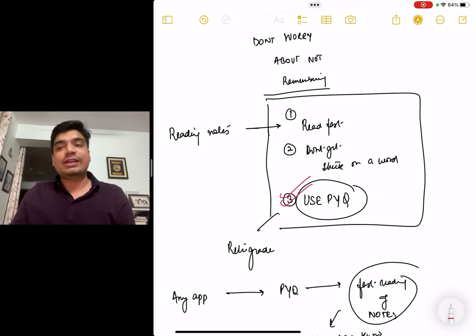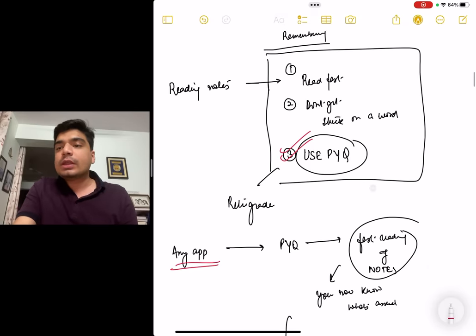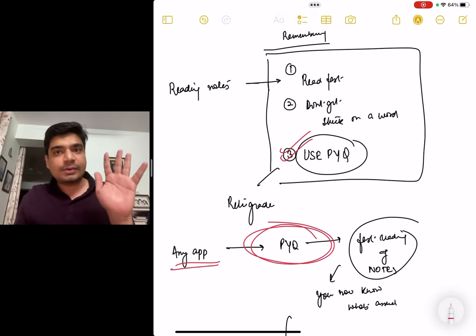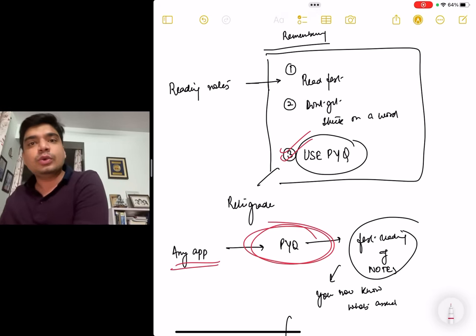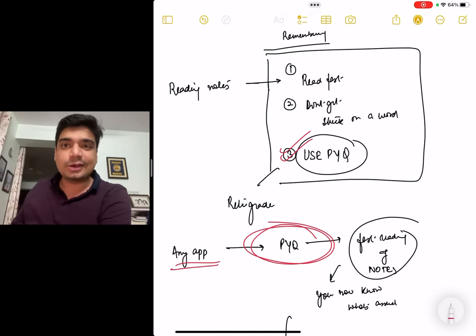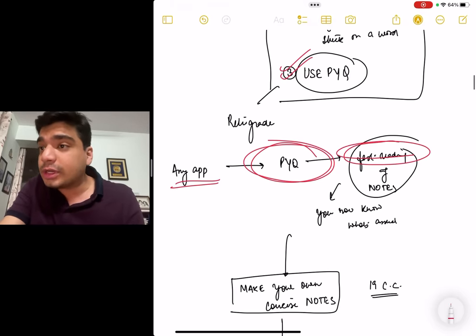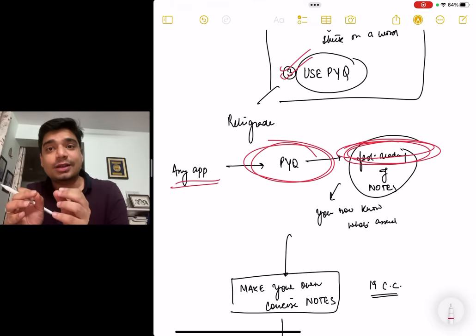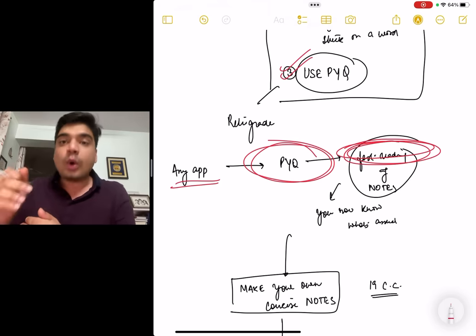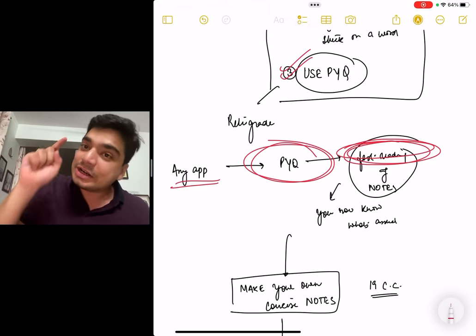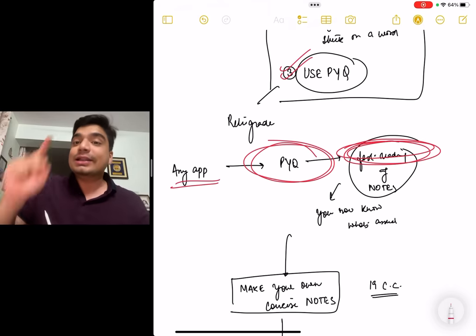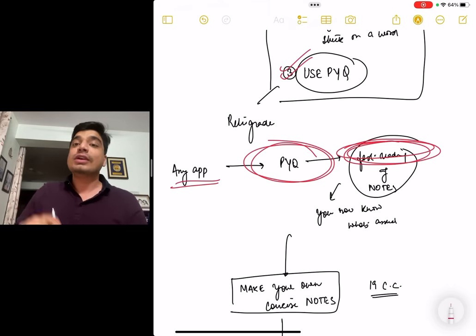Doing the same thing again and again, thinking you'll remember it - you won't remember anything. The goal is to make notes, notes which are revisable. So read fast. And at the same point of time, whatever topic you're reading, solve the past five to seven years previous year question. You'll get to know what is more important. Based on the previous year question and based on what you have read, make your own concise notes. This is very important. Do a fast reading. Don't get stuck on a word. The goal is to write it down. When you write it down, it's a slower process, but it will stay in your memory longer.